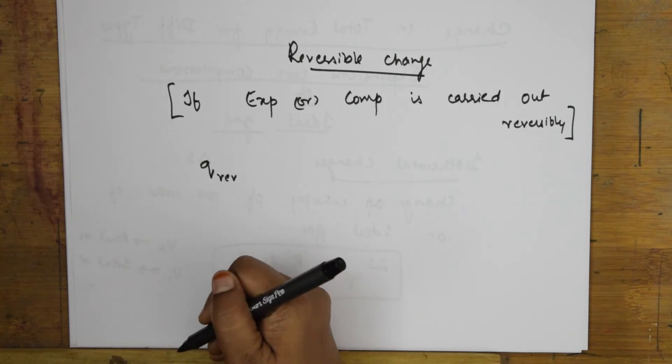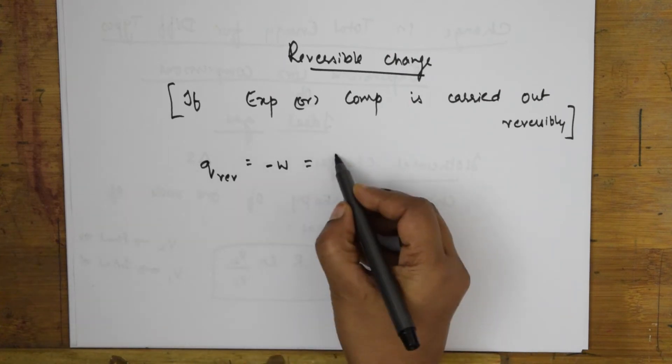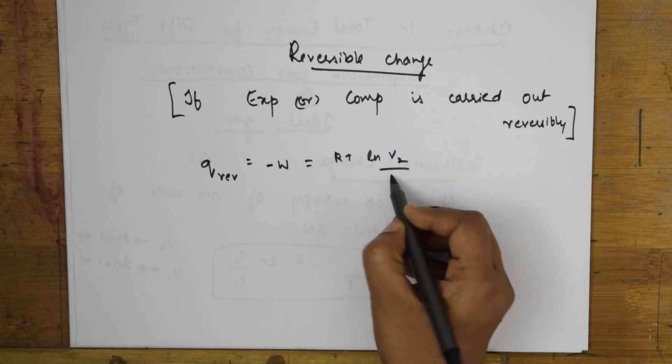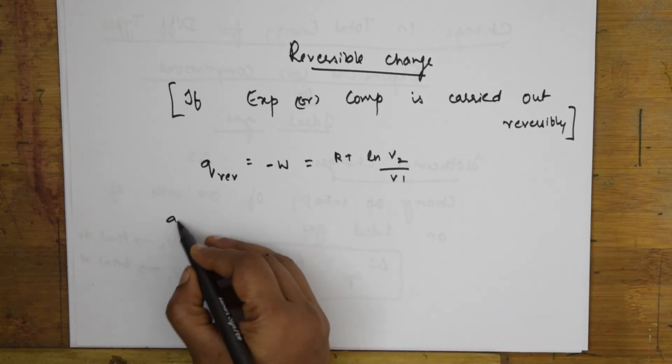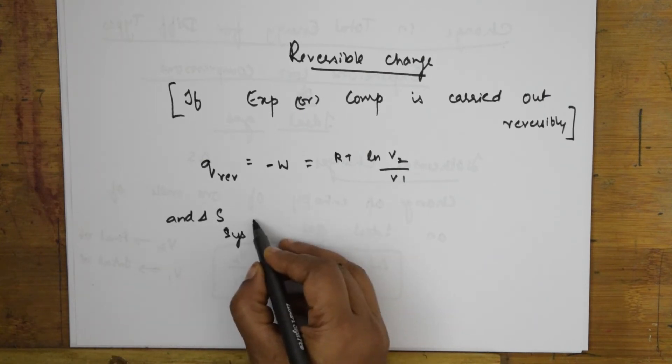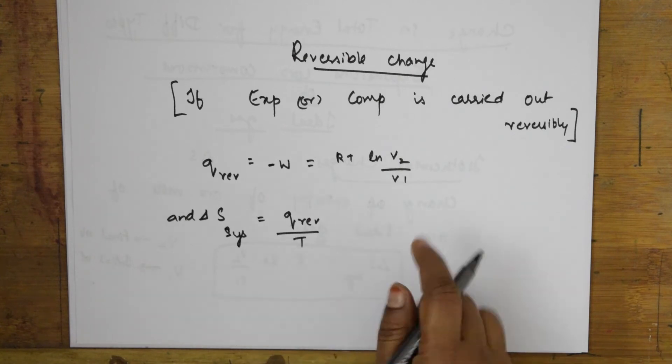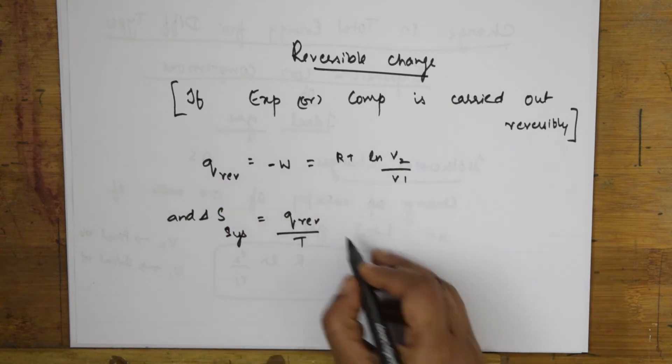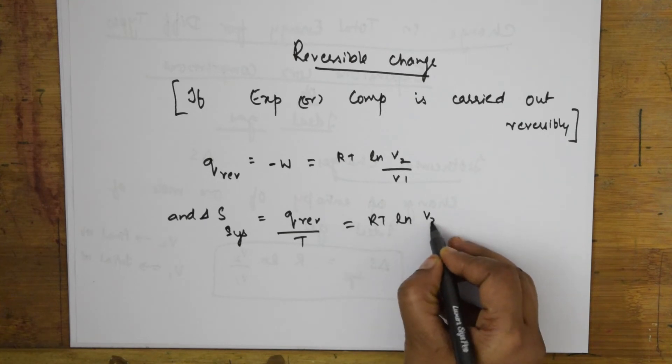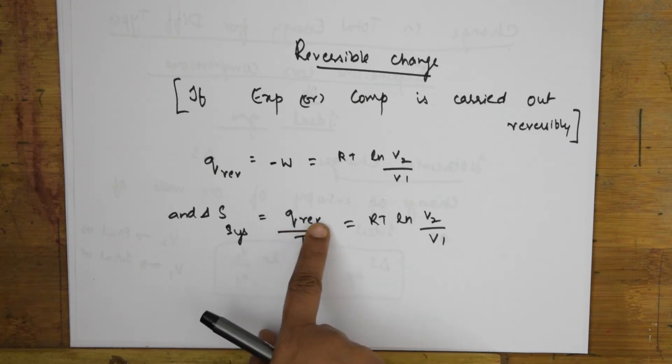I've already given the formula. Suppose if I take a reversible change, this will become q reversible. So q reversible is equal to minus work. For expansion this is equal to RT ln V2 by V1. And we have already written delta S system. What is this equal to? It is equal to q reversible by T. This is further equal to RT ln V2 by V1, divided by T, which gives R ln V2 by V1.